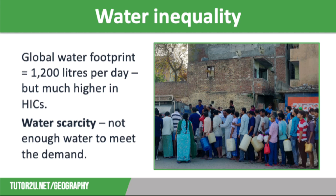We also need to consider water scarcity — this is when there isn't enough water to meet demand, either because supplies are insufficient (physical water scarcity, e.g. not enough rainfall) or because infrastructure is inadequate (economic water scarcity, e.g. the country can't afford a decent pipe network).